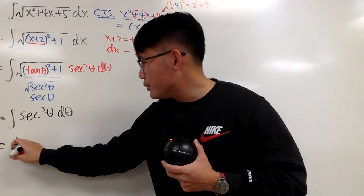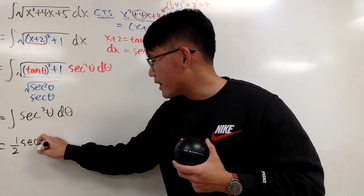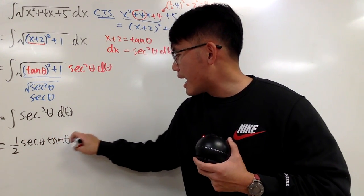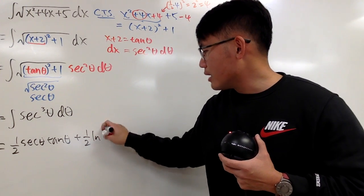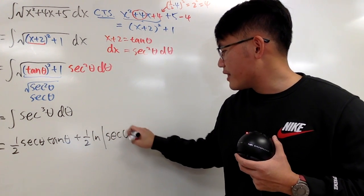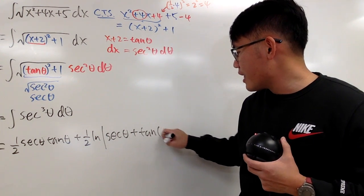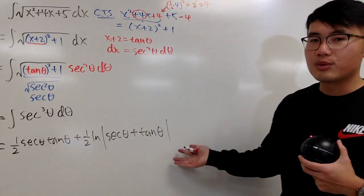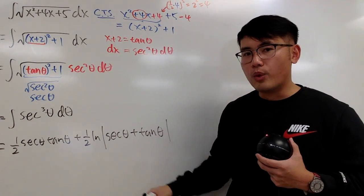The answer to this right here is equal to 1 half secant theta times tangent theta plus 1 half natural log absolute value secant theta plus tangent theta like this. And we are not done yet because we have to go back to the x world.